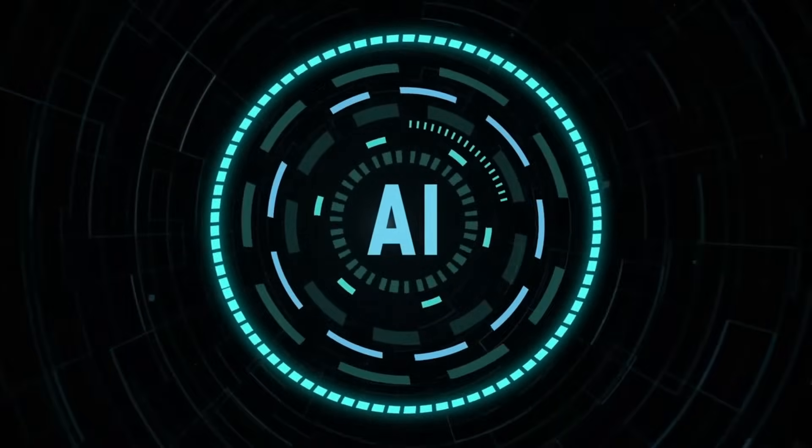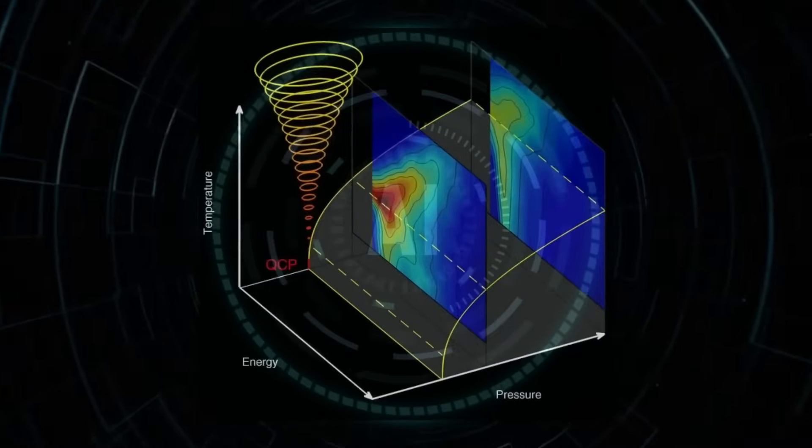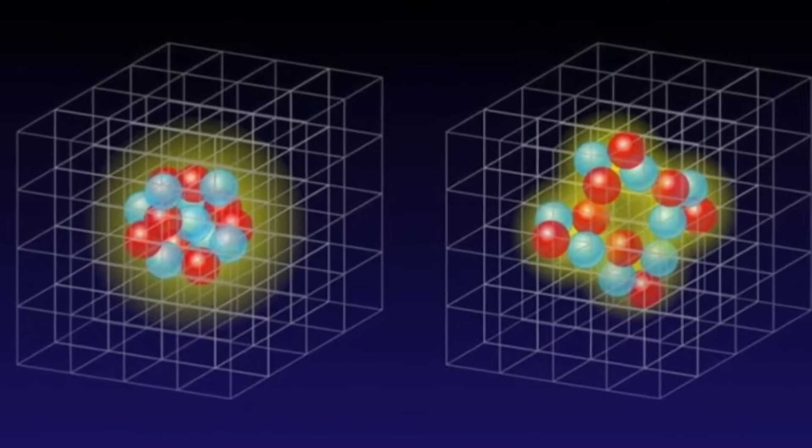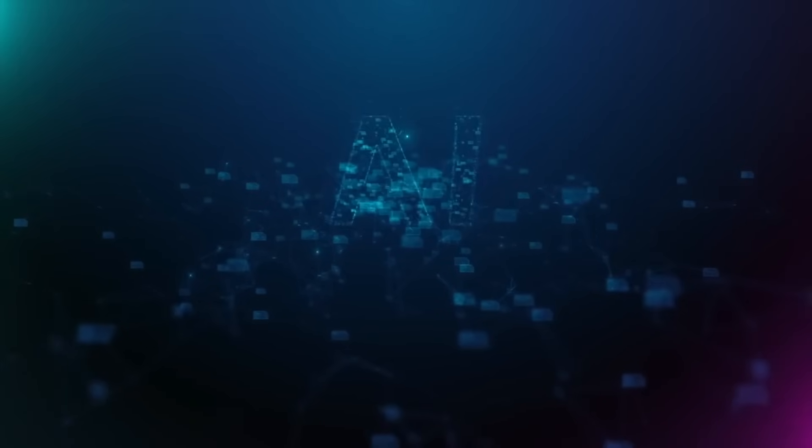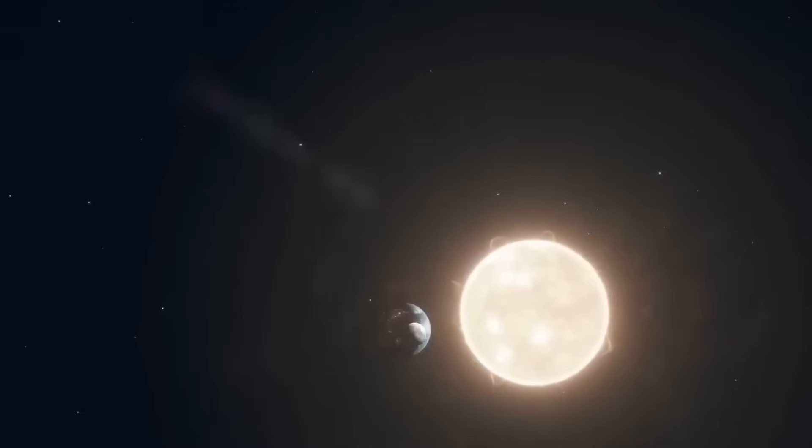But this is where things get even stranger. According to some quantum theories, a shift like this could occur without any warning. It wouldn't be a dramatic explosion or a cosmic event we could observe in the sky. It would be a breakdown of the very laws that define reality. And this is just one of the scenarios the AI presented.